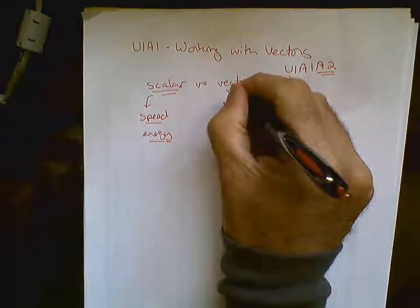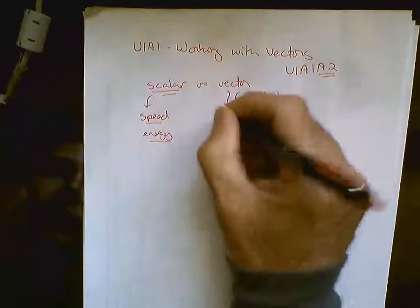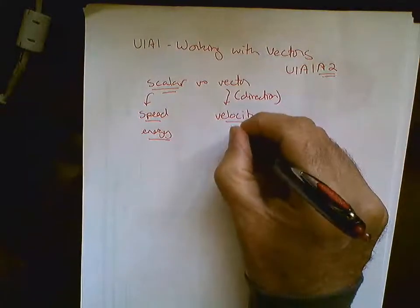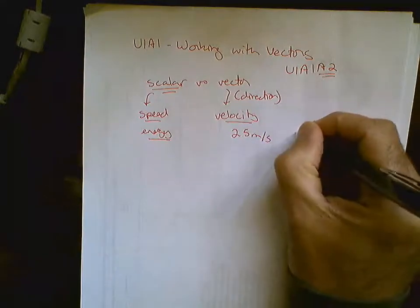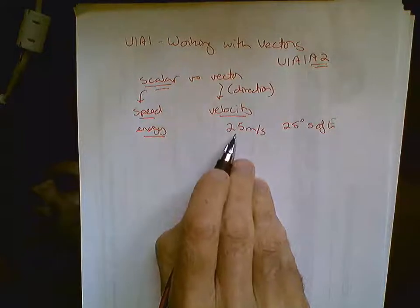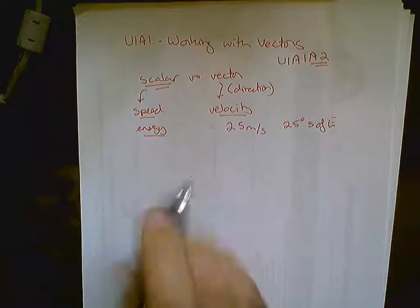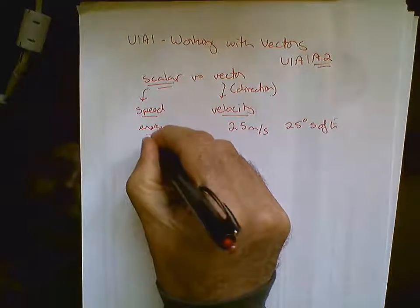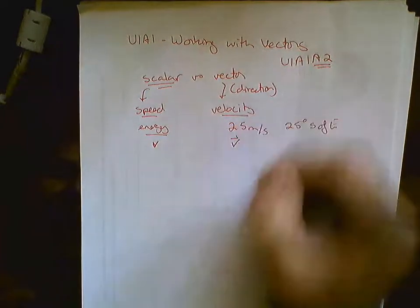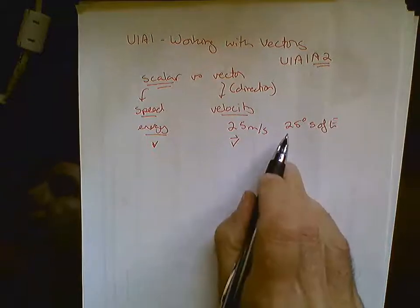Vector is when we're concerned with direction. An example of a vector is velocity. Now you might think velocity and speed are the same thing. The difference is velocity has a direction attached to it. So for example, if you get on an airplane and go somewhere, you not only care about how quickly you're going, but you care about what direction you're moving in. So you might see something like 25 meters per second and 25 degrees south of east. So it is a velocity because it has both a speed and a direction. The symbol for speed is V. The reason we don't use S is because S is seconds. Velocity is that same V, but with a vector arrow over it, meaning you're going to have a direction attached to it.